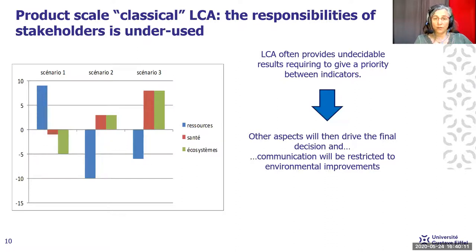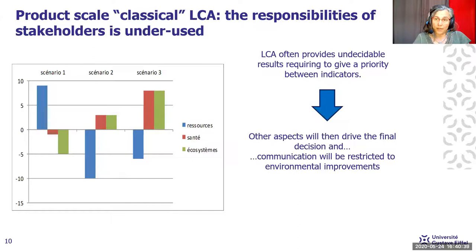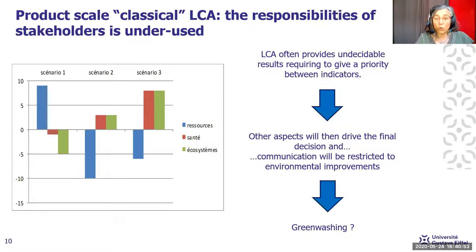Often, other aspects drive the final decision. You have to set priorities between indicators, but the decision-maker often does not really know what an indicator means. So the decision-maker will often choose what is best for the highest priority indicator. When the decision is already made based on other considerations like costs, the environmental study will serve as a justification and communication will be restricted to improvements. This is close to greenwashing, and it is exactly what we want to avoid in life cycle assessment.